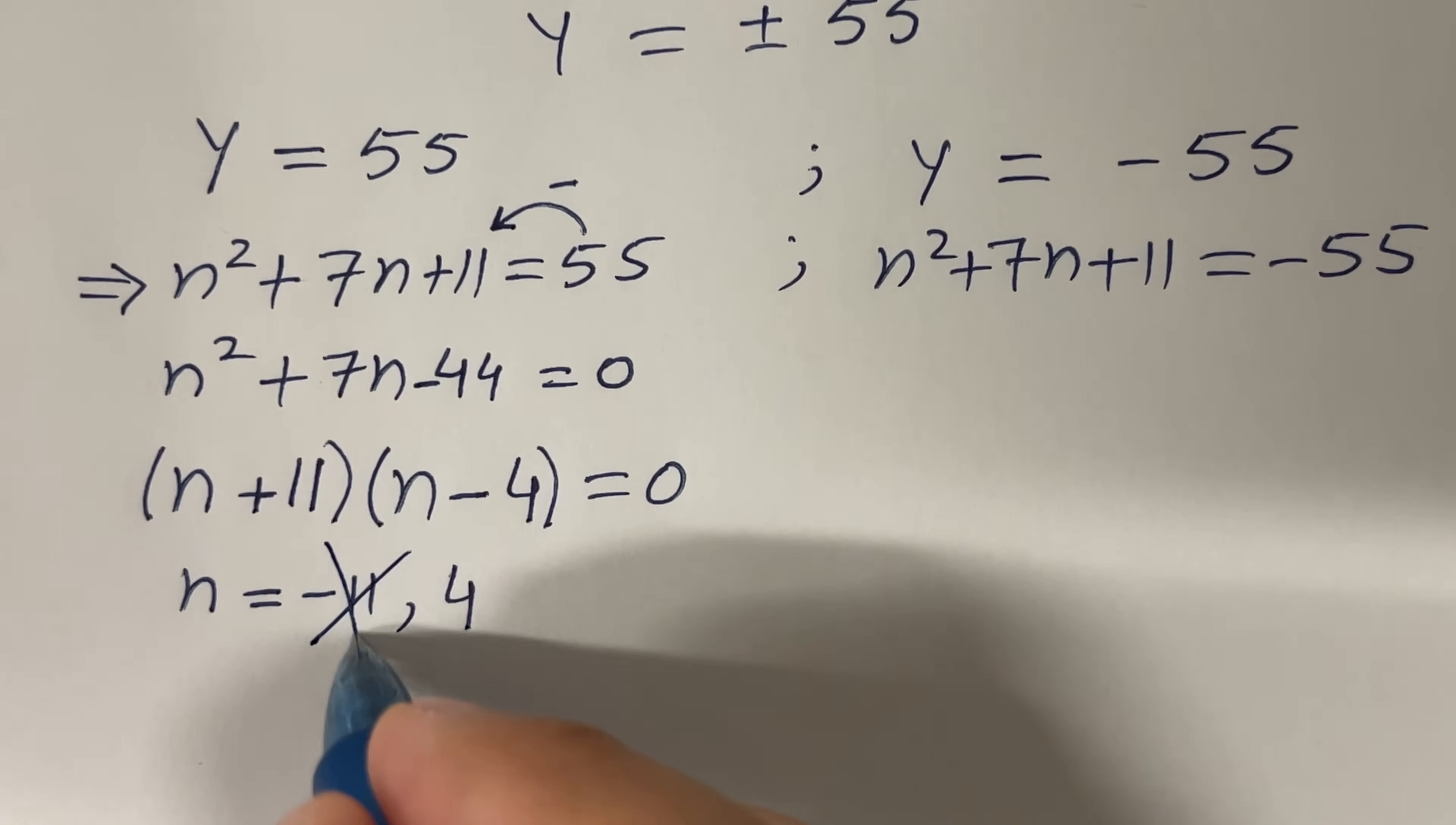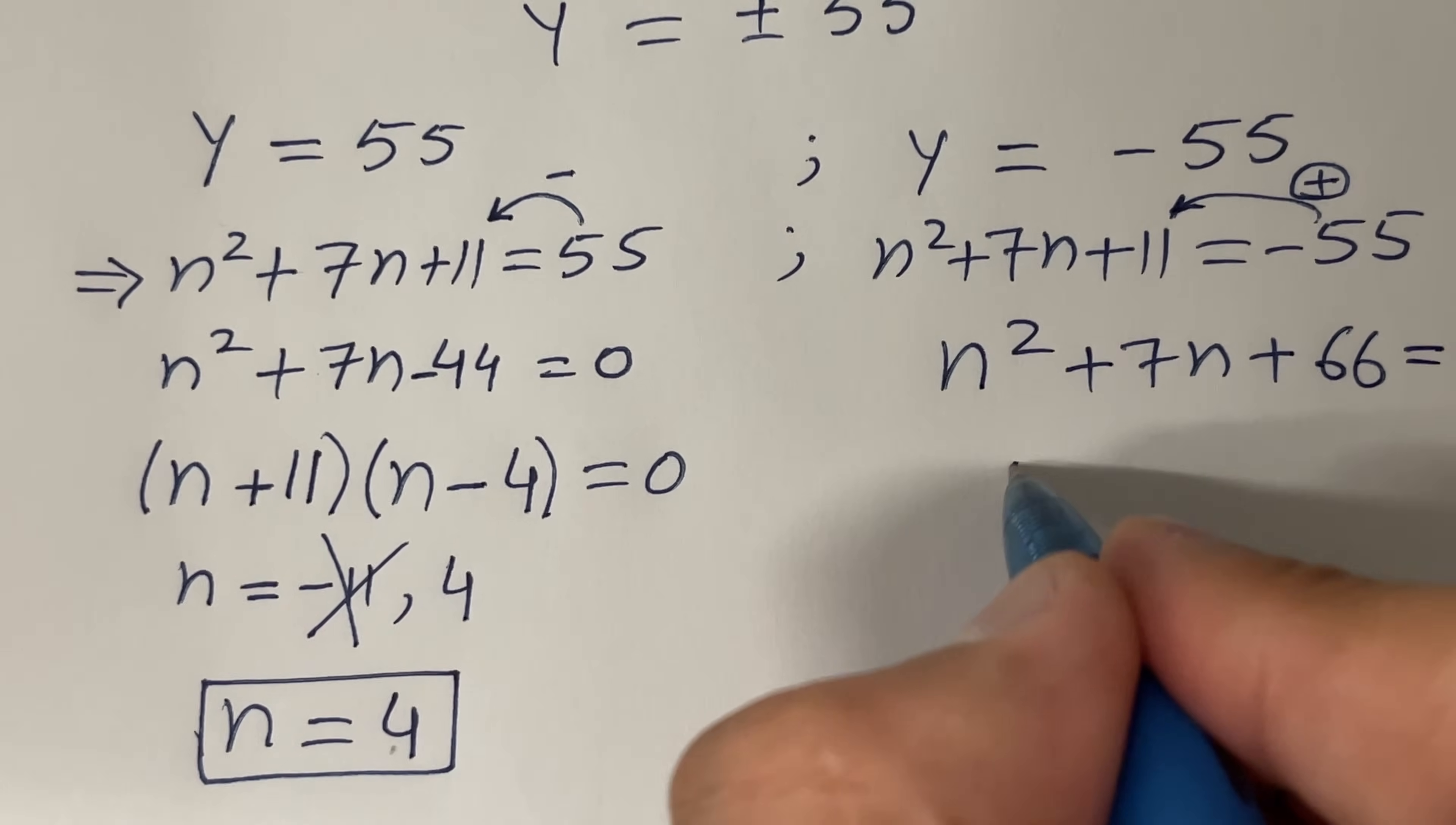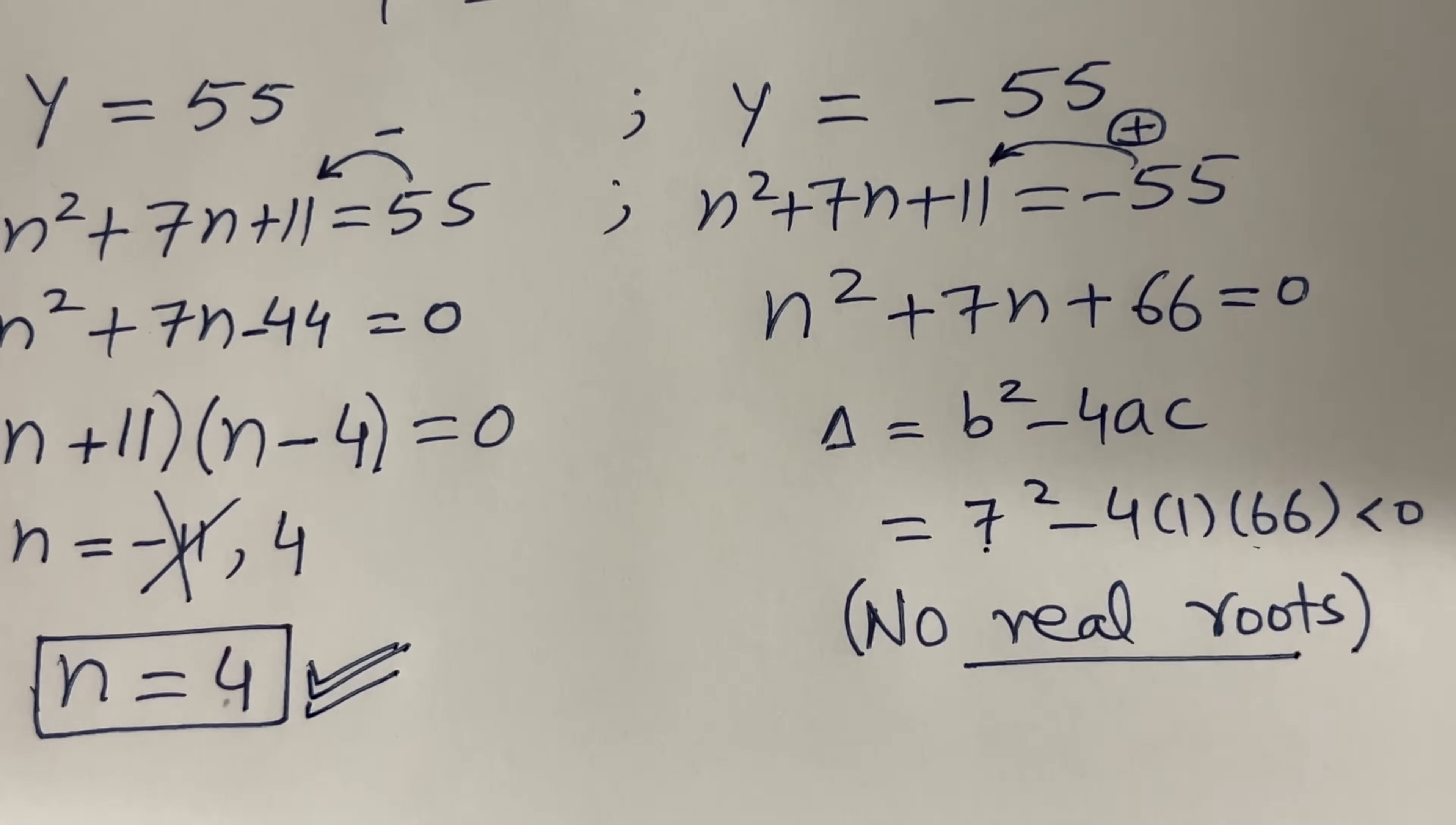But n cannot be -11 because factorials, you cannot find factorial of a negative number. Therefore, you will get n = 4, the only solution here. And if you look at this equation, then you will have n² + 7n + 66 = 0 if you move this guy to the left-hand side. Let's find the discriminant, which is b² - 4ac. b is 7² minus 4 times 1 times 66. This guy is huge compared to this one, so this is negative. Therefore, we have no real roots here. And we cannot define factorial of complex numbers. So this guy is the only solution of this given equation.